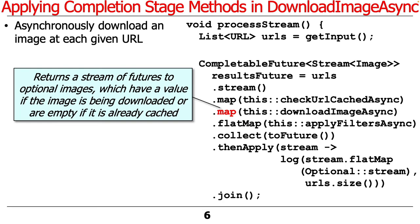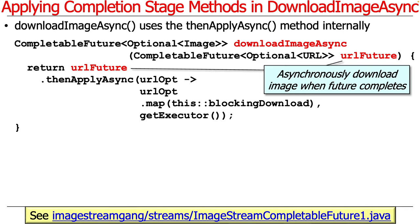They'll have a value if the image is being downloaded, or they'll be empty if it's already cached. Let's take a look at DownloadImageAsync — this is a really interesting method that illustrates concepts relevant to your programming assignment, because you do things similar to this, though not identical.